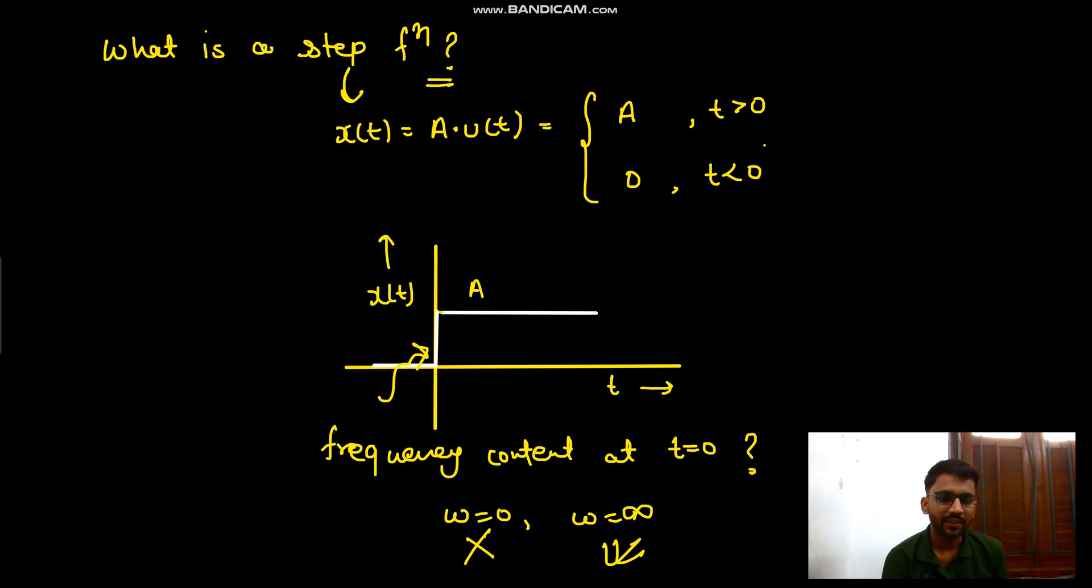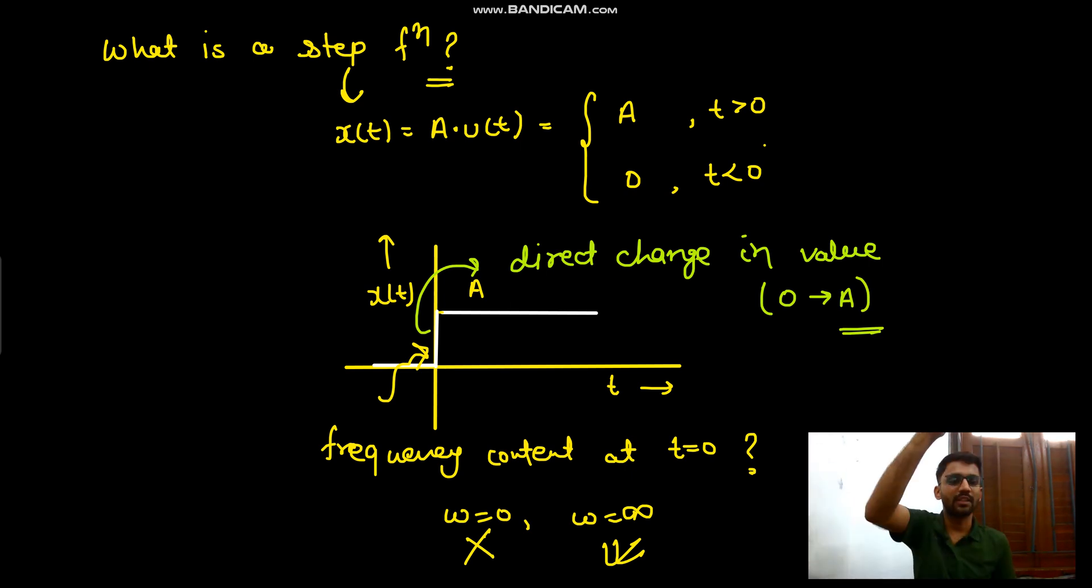Since we are having a direct jump here, a direct change in value from 0 to A - at t equals to 0 minus we had 0 value, at t equals to 0 plus we are having A value. So there is a direct jump. That's why the frequency content is infinity.